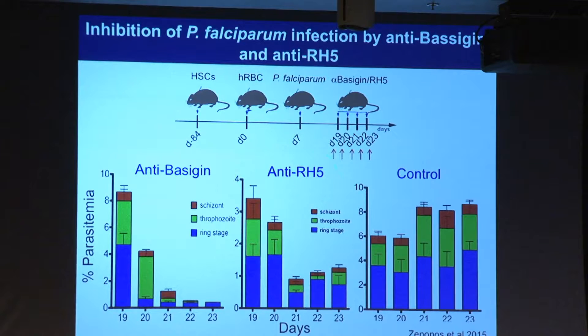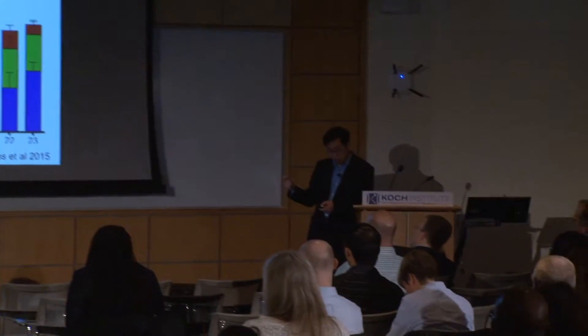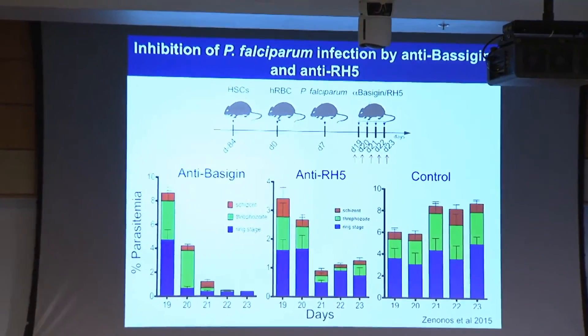Given the antibody against RH5, although there is inhibition, the drop is not as dramatic. RH5 has been a favorite candidate for vaccine development, but in all studies it has not worked well. Using purified anti-RH5 antibody, we can recapitulate that effect. This is most likely because RH5 is only expressed on the parasite for a very short time, so there is not enough time to neutralize it. On the other hand, using anti-basogen—targeting the host receptor—it works much better.